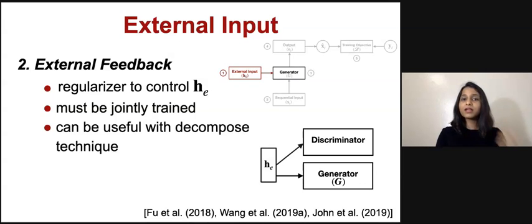The discriminator gives feedback to h_e whether it actually contains the desired control attribute or not. In this case, the discriminator must be jointly trained with the generator and the encoder.